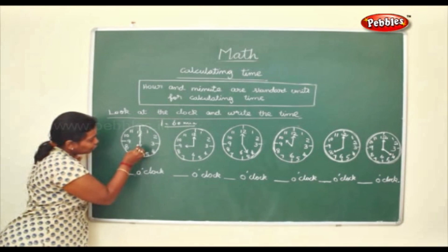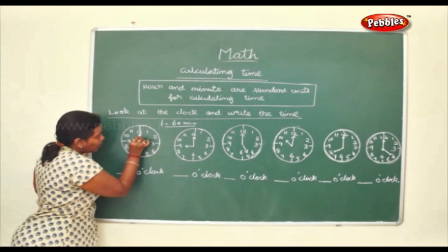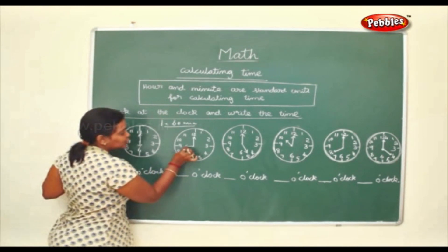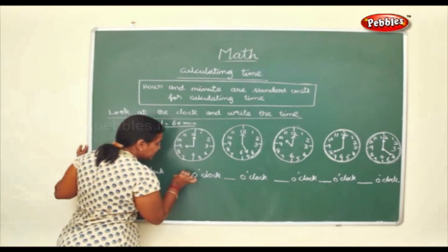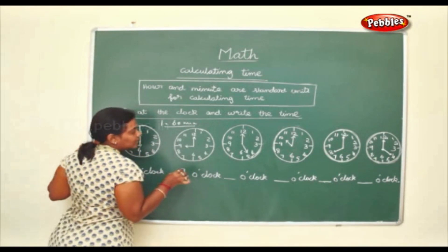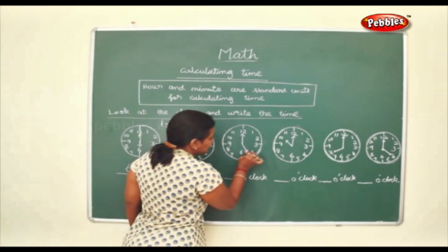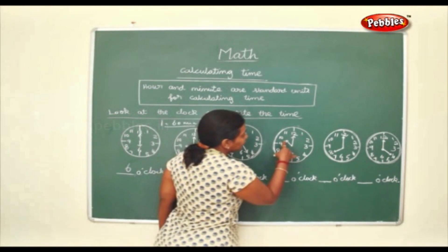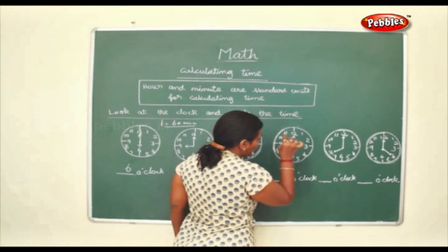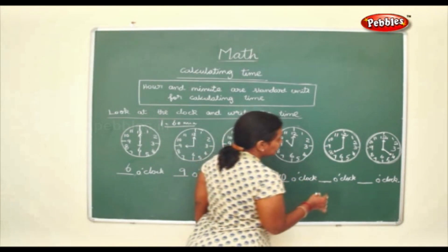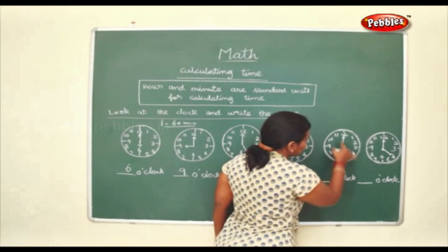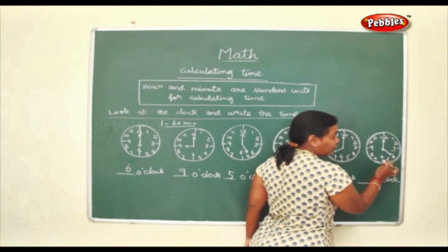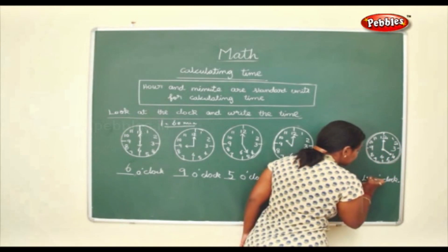Here the shorter hand is at six and the longer one is at twelve, which means this is six o'clock. Here the shorter hand is at nine, longer one is at twelve — this is nine o'clock. Here the shorter hand is at five, the longer one at twelve — it is five o'clock. Short one at ten, long one at twelve — ten o'clock. Short hand at eight, long one at twelve — eight o'clock. Short one at four, long one at twelve — four o'clock.